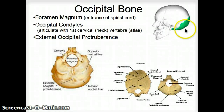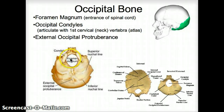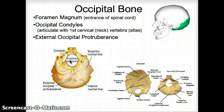Let's go to the occipital bone — that's the back of the head bone, the green one here. It has a big hole, and that's where the spinal cord goes through. Actually, the brainstem goes in and out of the hole, but that's where the spinal cord comes out, connecting the brain to the rest of the body. That hole is called the foramen magnum — magnum means big, and foramen is the word for a hole.